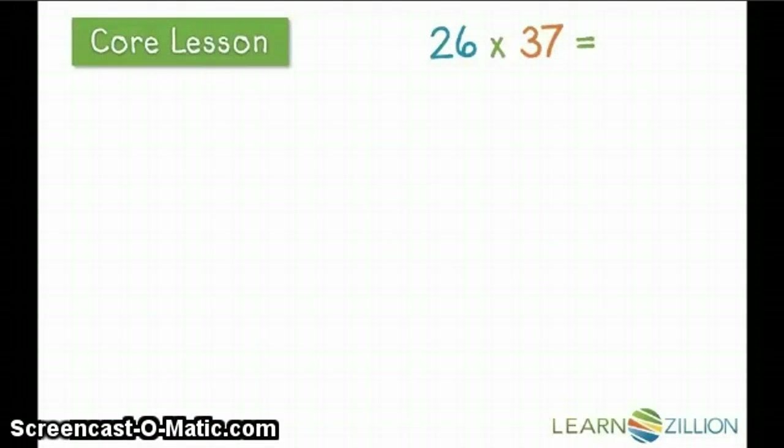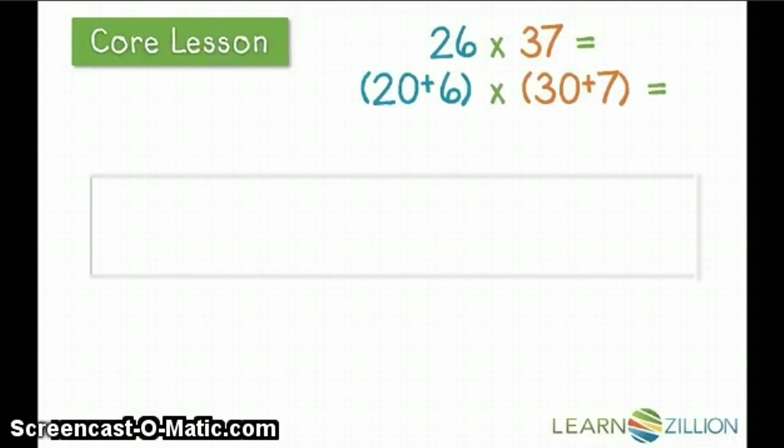Looking at 26 groups with 37 in each group means we need to think about both factors in expanded notation. 20 plus 6 multiplied by 30 plus 7. We'll begin with one large rectangle and the amount in each group. In this case, it's 37.